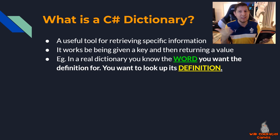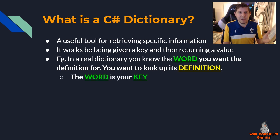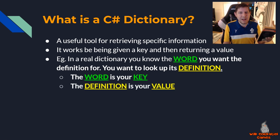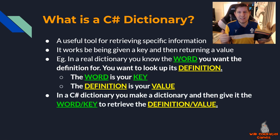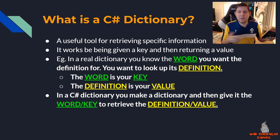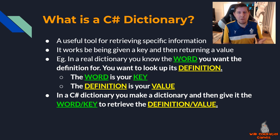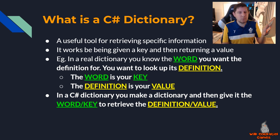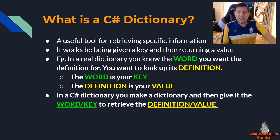So the word is my key and the definition is the value I'm trying to retrieve. The word is the key and the definition is the value - I'm using colors to keep it clear. This is how a Unity dictionary works as well. In C# or Unity, you make a dictionary, give it the word or key you want to look up - in this case 'quaff' - and then retrieve its definition or value. Both the key and value here would be considered strings.